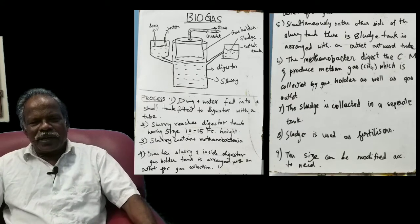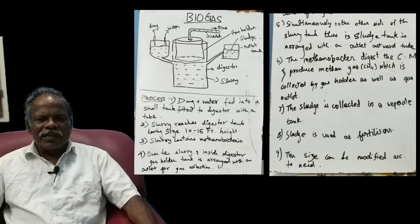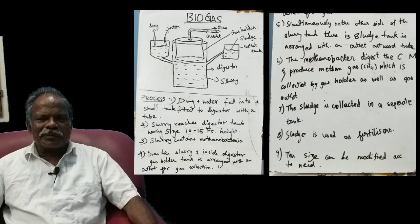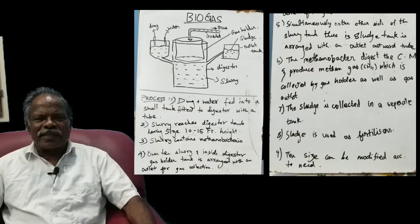Why is biogas prepared? In villages we have a lot of cattle, and their cowdung is used for preparing the biogas. The cowdung contains methanobacteria.